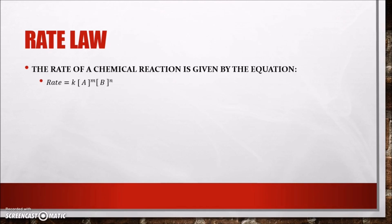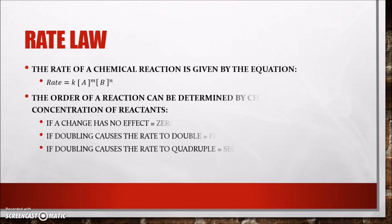Each reactant must be varied separately while the other is kept constant, and the effect on the rate of the reaction is observed and noted. If a particular change in concentration has no effect, the exponent is 0 and the reactant is zero order. If doubling a reactant causes the rate to double, the exponent is 1 and it is first order. If doubling a reactant causes the rate to quadruple, the exponent is 2 and it is second order. The overall order is determined by adding M and N.